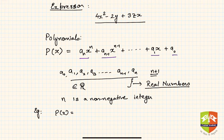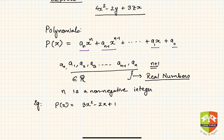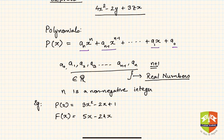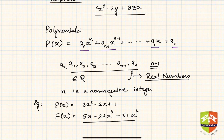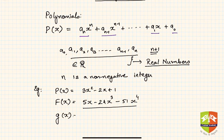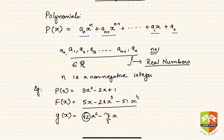Examples of polynomials: P(x) = 3x² − 2x + 1 is a polynomial. Another example, F(x) = 5x − 24x³ + x⁴, is also a polynomial. Another example: g(x) = √2·x² − (7/5)x. The coefficients here are √2 and −7/5, both of which are real numbers, x is the variable, and all powers are non-negative integers — so these are all polynomials.